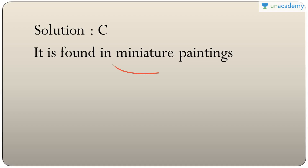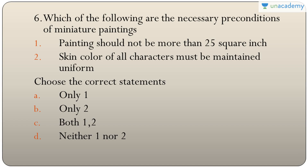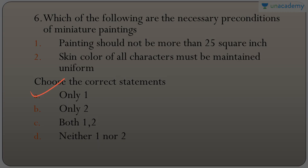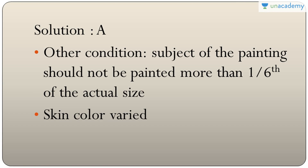Question six: necessary preconditions of miniature paintings — the painting should not be more than 25 square inches, and skin color of all characters must be maintained uniform. The first is true, but skin color need not be uniform — for example, Krishna was depicted with blue color while ladies were depicted with white. The answer is A — only one.